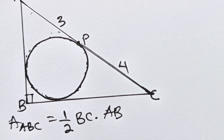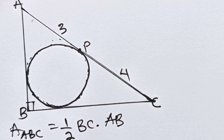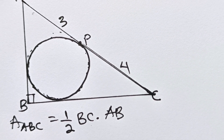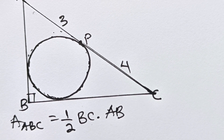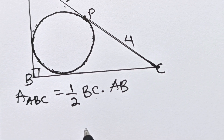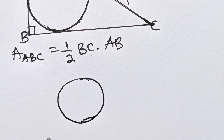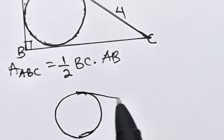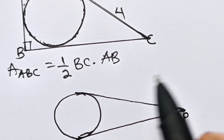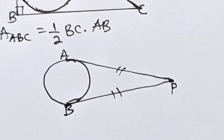I want us to remember this theorem because it's very important to us right now. This theorem says that from an external point, the lengths of two tangents are equal. What this means is that if we have a circle and you have two tangents — this is the first tangent, this is the second tangent — and they meet at point P, then AP and BP are equal.